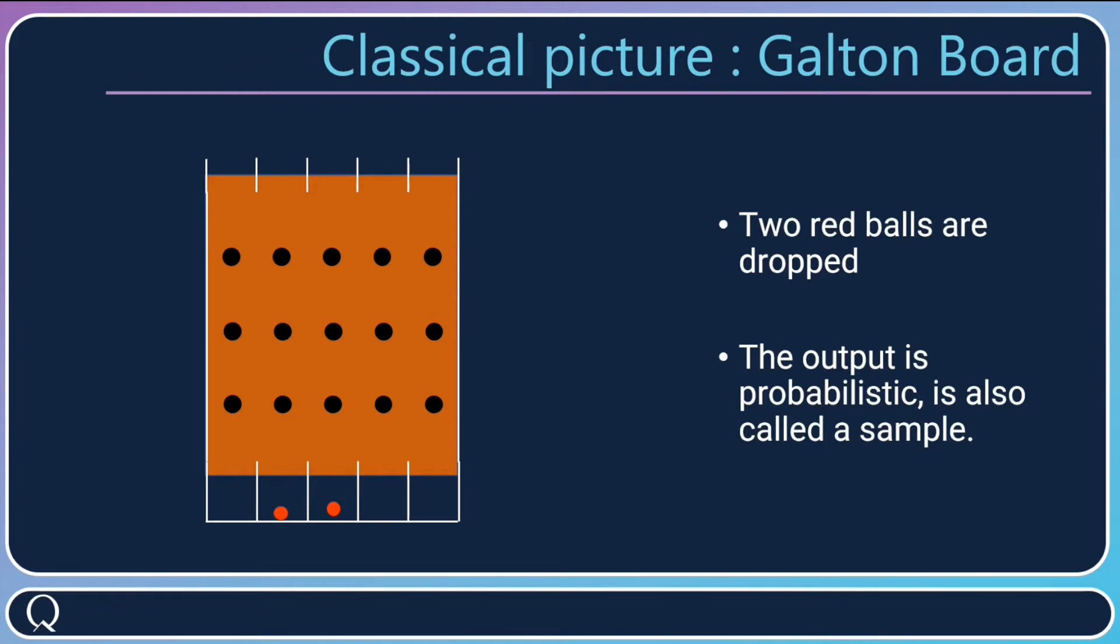If you were to run the experiment another time, you could have other slots for the balls. Where the balls are, we call it an output. The output is probabilistic, also called a sample. We could have many samples for many times we run the experiment.